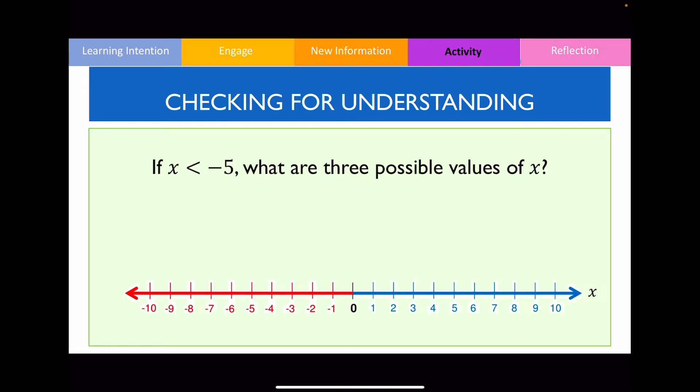Have a go with this question. If x is less than negative 5, what are 3 possible values of x? We just need to state 3 numbers that are smaller than negative 5. Numbers smaller than negative 5 could be negative 6, negative 7, and negative 8.